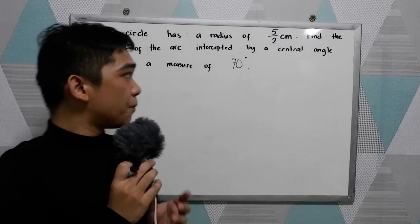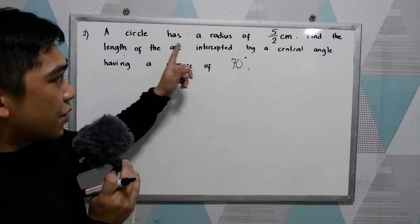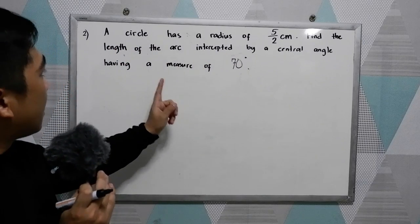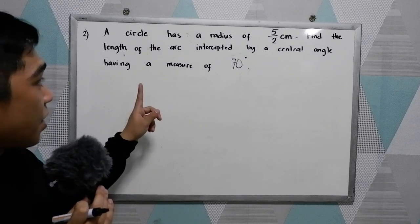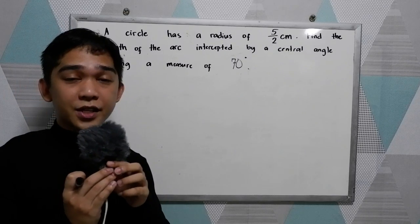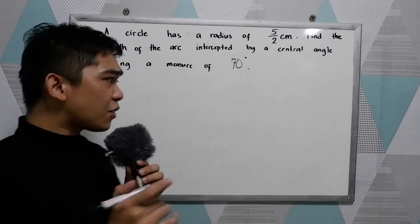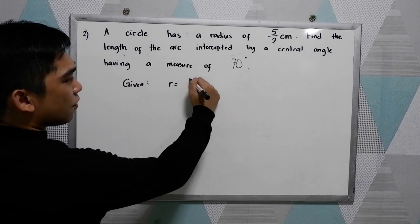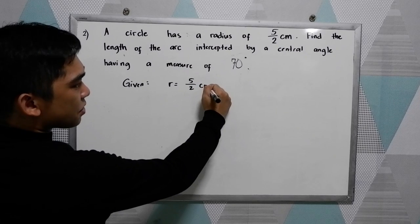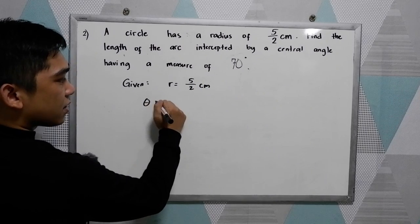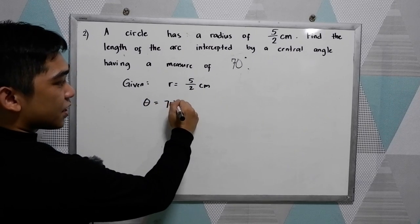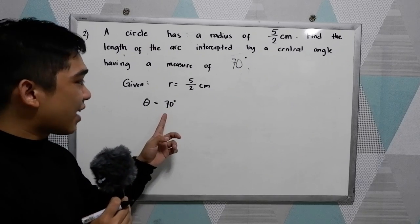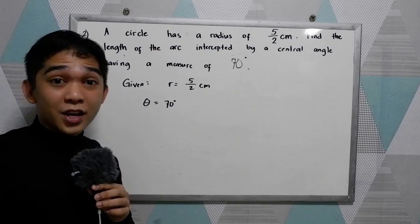Now our second example. A circle has a radius of 5 over 2 centimeters. Find the length of the arc intercepted by a central angle having a measure of 70 degrees. Write all the given. We have a radius of 5 over 2 centimeters and central angle 70 degrees.